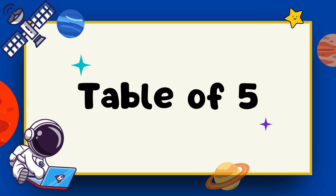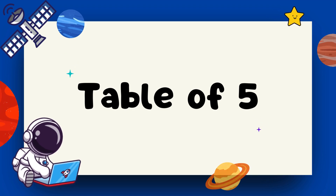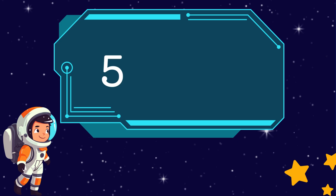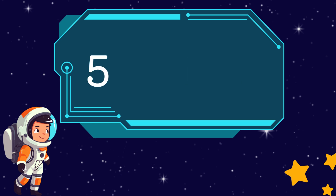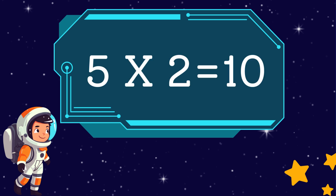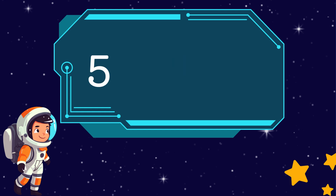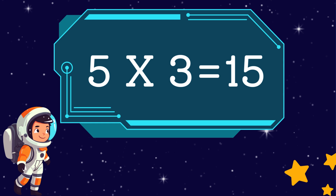Table of five. Five ones are five. Five twos are ten. Five twos are twenty.